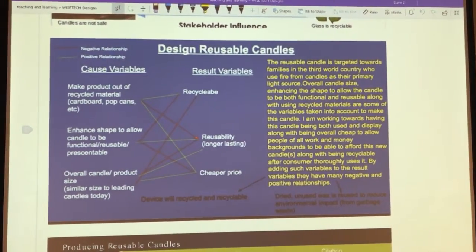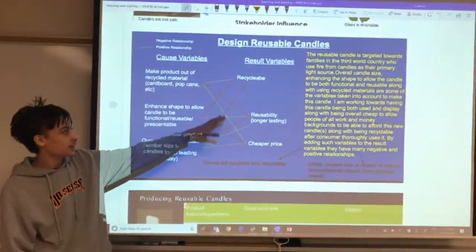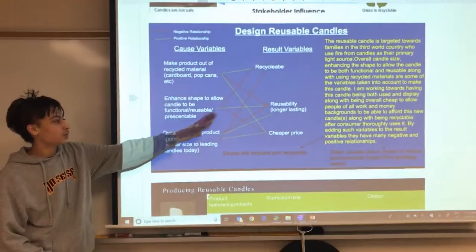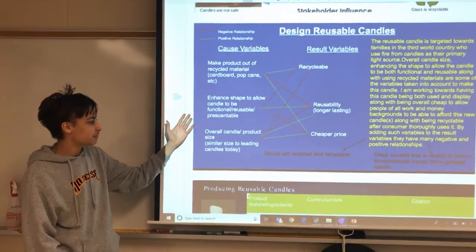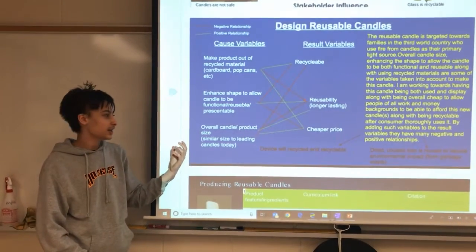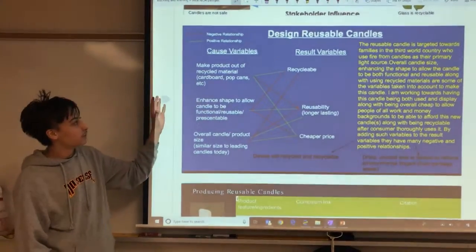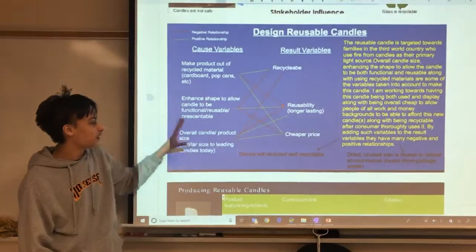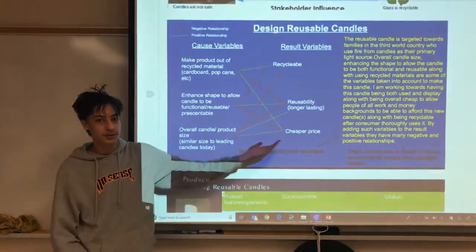I really wanted my candle to be cheap, reusable, and recyclable. But I knew that to do this, I also needed to enhance the shape, keep in mind the overall size of the candle, and make it out of recycled material. This matrix is pretty much just the relationship of how these factors could positively and negatively affect what I wanted the results to be.